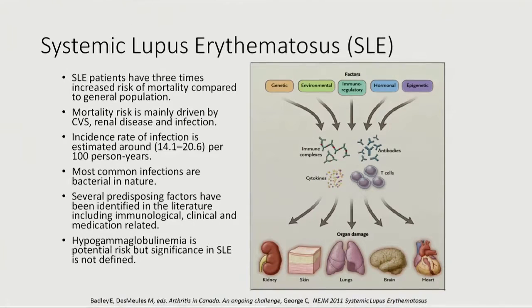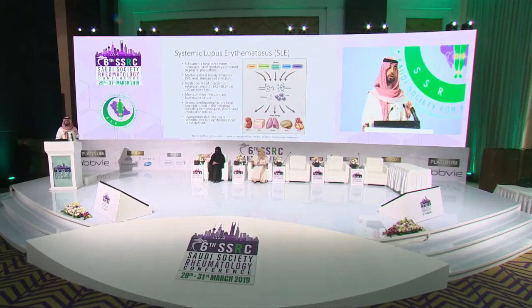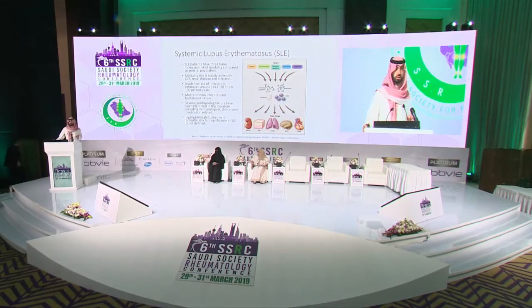Systemic lupus erythematosus is really a multifactorial disease, and it also affects so many organs. The problem is that lupus patients have increased risk of mortality — three times the risk of mortality compared to the general population. If we look at the drivers of these mortality risks, we will find that cardiovascular disease, infection, and renal disease dominate the causes of mortality. However, infection is a very interesting part that was underrepresented in terms of studies of lupus.